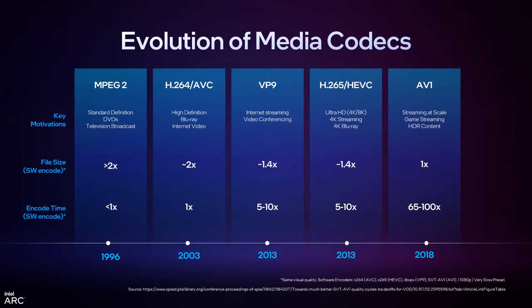The evolution of media codecs has been massive. It started around MPEG-2 in 1996 — just as DVDs started — and has gone all the way through H.264, VP9, H.265, and AV1. Each generation has resulted in higher and higher compression rates. The complexity line tells you that a software encoder would take 100 times longer on AV1 versus the original MPEG-2. These algorithms look for a lot more redundancy but are a lot harder to run — that's why we've built hardware to accelerate them.